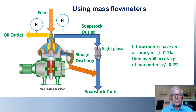You have to totalize the flow for over an hour or more to get a good idea of the total loss, including the sludge discharge. If the flow meters have an accuracy of plus or minus 0.1%, which is fairly typical, then the overall measurement could be out by up to 0.2% — okay for daily monitoring, but we need to do better than this if we want to balance flows to within one part in a thousand.